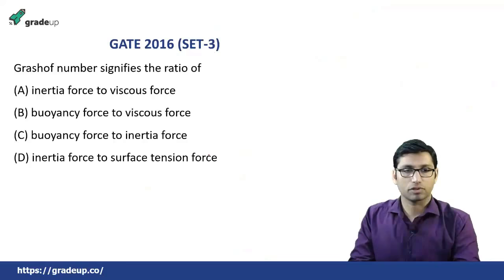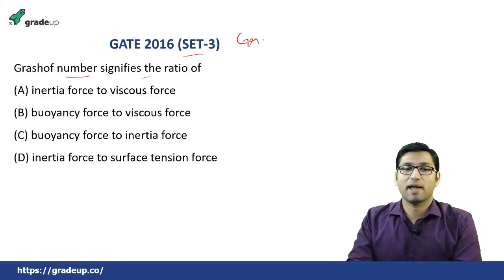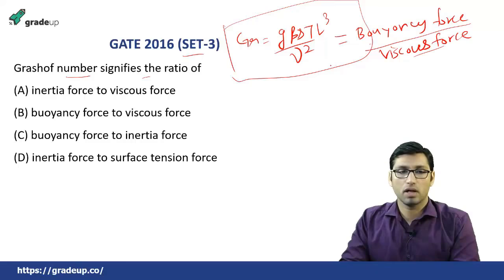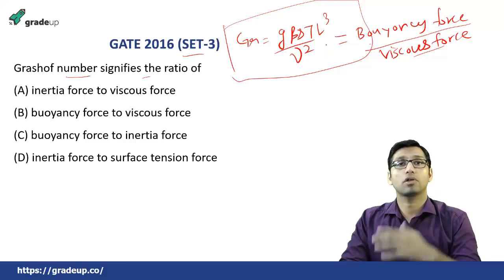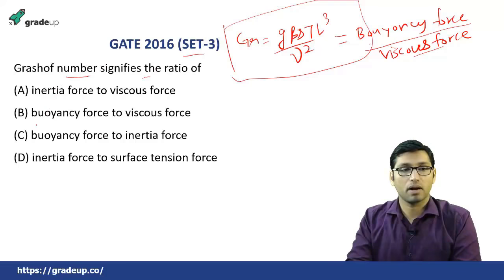Next question from GATE 2016 Set 3. This was a very easy question asking what the Grashof number signifies. We know the Grashof number is given by Gr = g × β × ΔT × L³ / μ². This represents the ratio of buoyancy force over viscous force. Just like Reynolds number for forced convection is inertia force over viscous force, for free convection, buoyancy force is the responsible force — so option B is the correct answer.